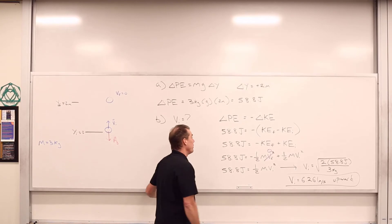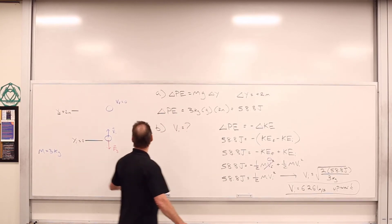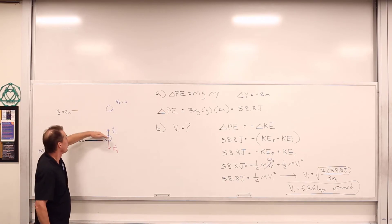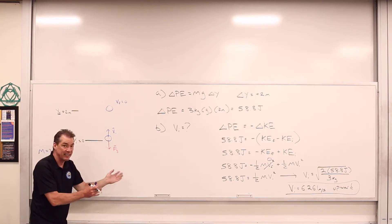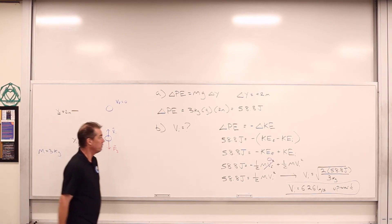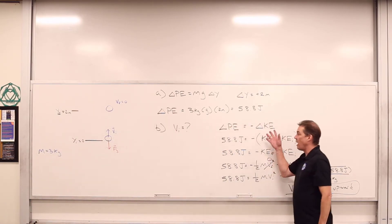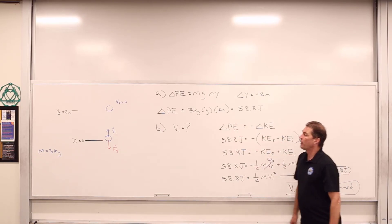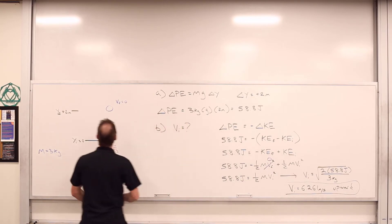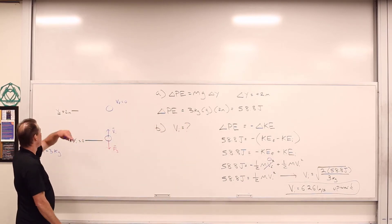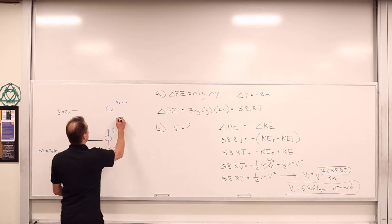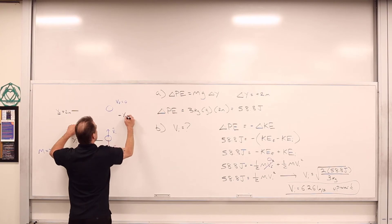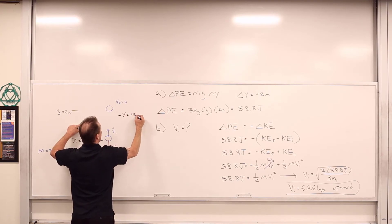So, going upward, the object is decreasing its kinetic energy — slowing down — but increasing its potential energy, going higher and higher. Converting kinetic into potential until all the kinetic is gone and we have only potential left. What if we asked how fast the object is going when it is 1.5 meters up? That displacement is equal to 1.5 meters.